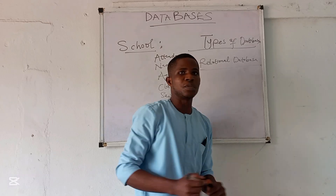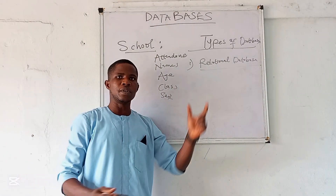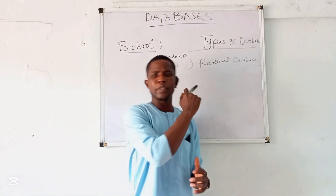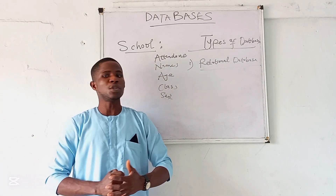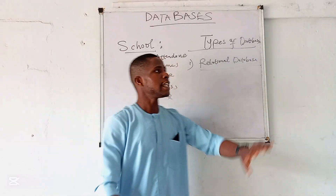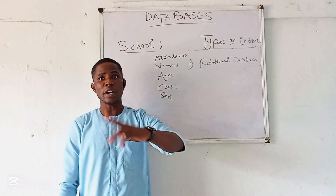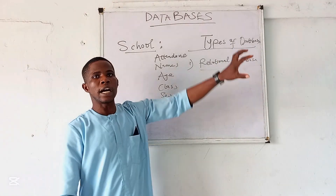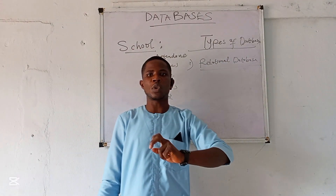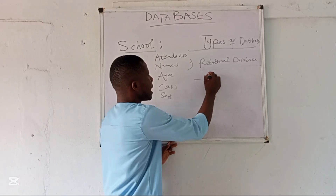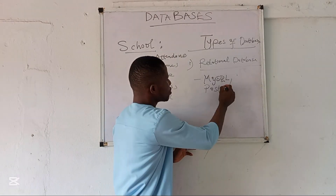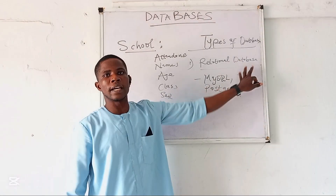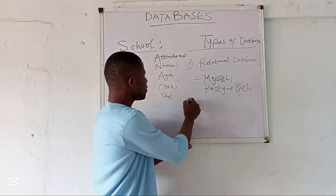Let me go into the types of databases. First, you have the relational database. As a back-end developer this is your niche, but as a developer generally you should be familiar with it. A relational database is like storing data in a spreadsheet — like Excel — storing data in rows and columns in a table. MySQL and PostgreSQL are programming languages that are based on relational databases.